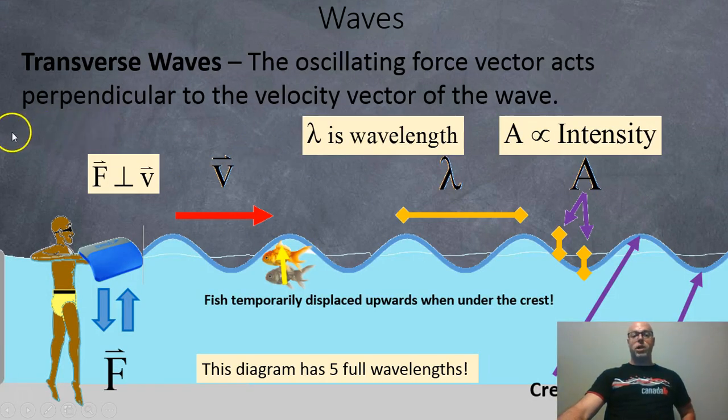Okay, so here's an example of a transverse wave. So for example, when I was in a public pool recently, I had a flutter board and I was going up and down, up and down with the board. And unfortunately, people didn't like that too much. And what happens is you can see the force is going up and down, but the waves are traveling perpendicular across the pool. And so here the force is perpendicular to the velocity vector.